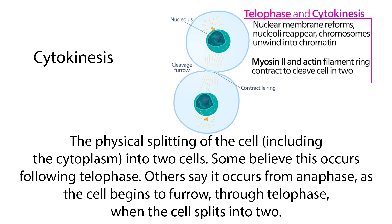Then there's cytokinesis. This is the physical splitting of the cell, including the cytoplasm, into two cells. Some believe this occurs following telophase. Others say it occurs from anaphase, as the cell begins to furrow through telophase when the cell actually splits into two.